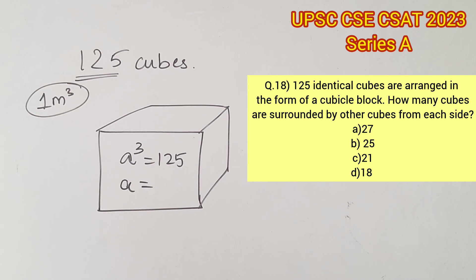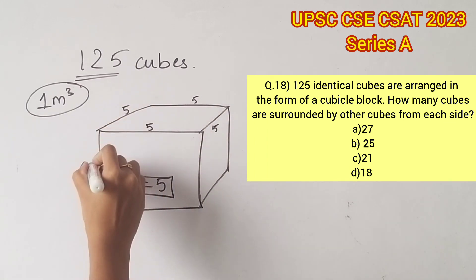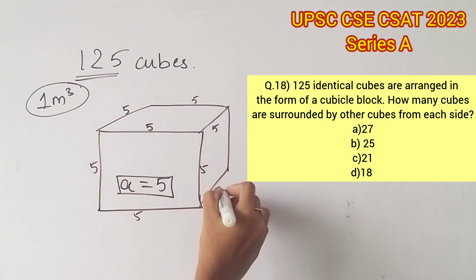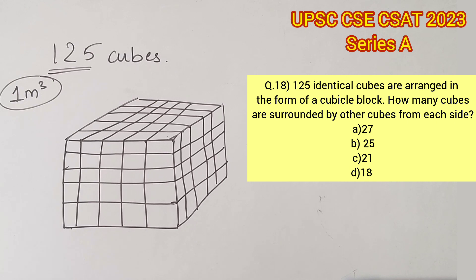From this we can say that each side is of length 5, which means 5 cubes are stacked from each side to form a bigger cube. This will be the visual representation of how the cubes are stacked.